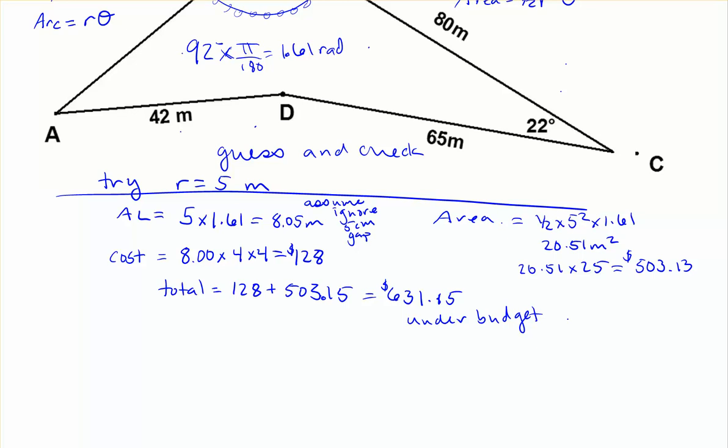That's okay. So under budget's okay, but let's try something bigger. See if we can actually get closer. Because they've got $850 to spend, so might as well make the garden as big as possible. So we'll try again. This time, let's guess maybe that our radius is equal to 6 meters, and see what happens. It's the same process. We'll find our arc length.